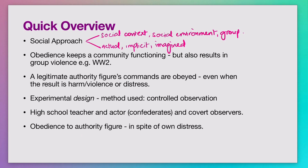Let's now look back at the study. This study was meant to see to what extent will a legitimate authority's commands be obeyed, even when that obedience results in some harm, violence, or distress to another. It was an experimental design, but the study was not an experiment, because Milgram was not establishing cause and effect. He was simply trying to observe what happens when people are commanded to cause harm to another, and at what point somebody will or will not defy the authority figure. This was a controlled observation.